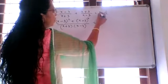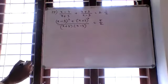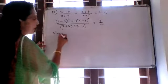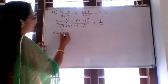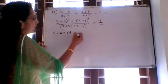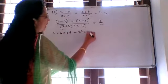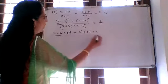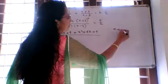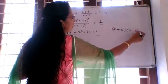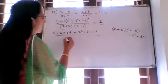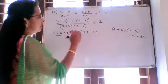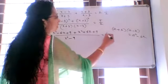This equals the mixed fraction 2 and 1/2, which is 5 by 2. Expanding x minus 3 whole square gives x squared minus 6x plus 9, plus x squared plus 6x plus 9. The denominator uses the identity a plus b into a minus b equals a squared minus b squared, so x plus 3 into x minus 3 equals x squared minus 9.